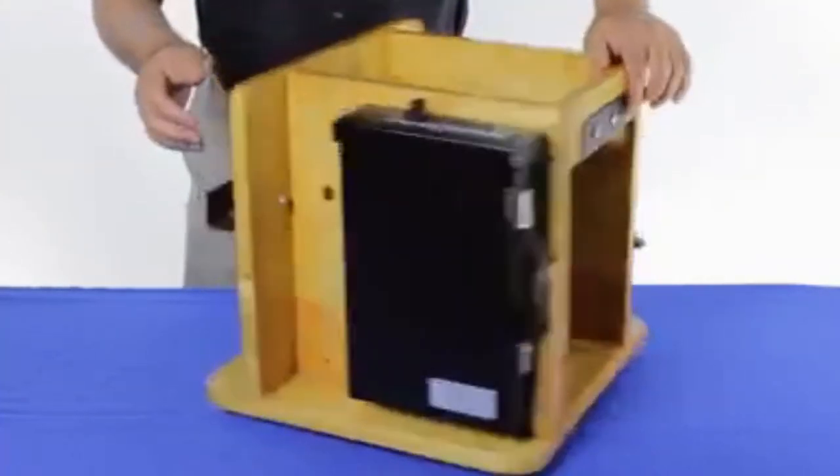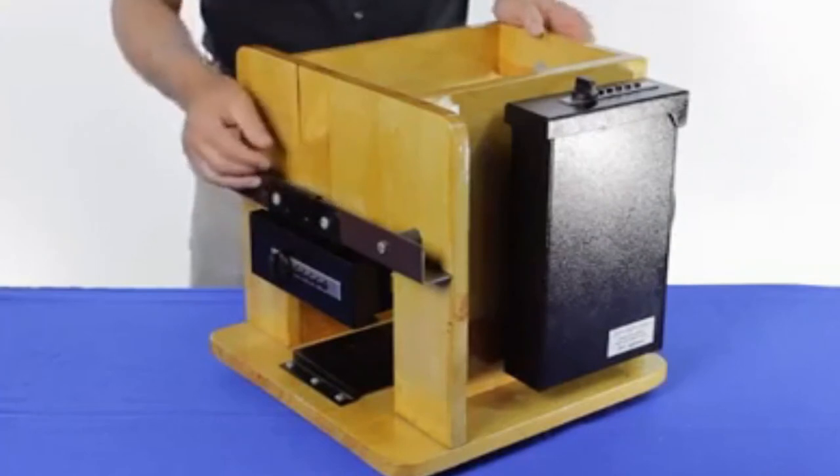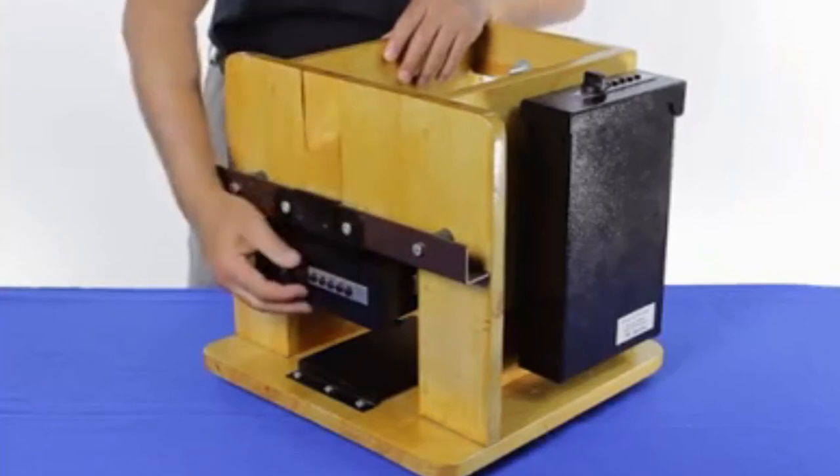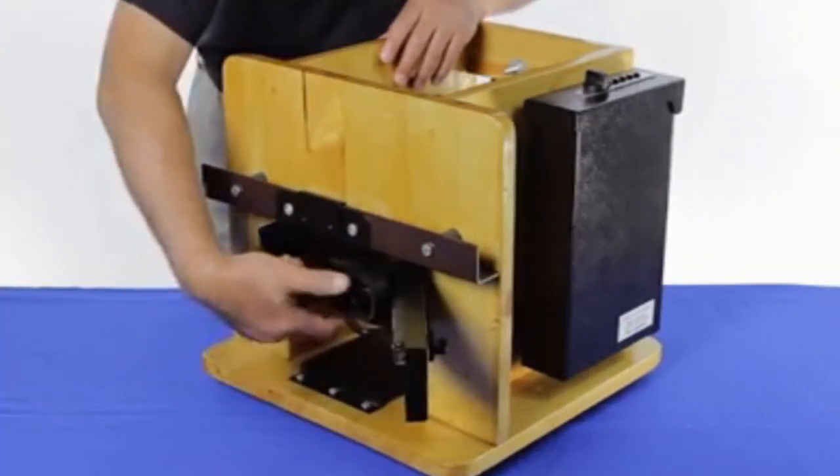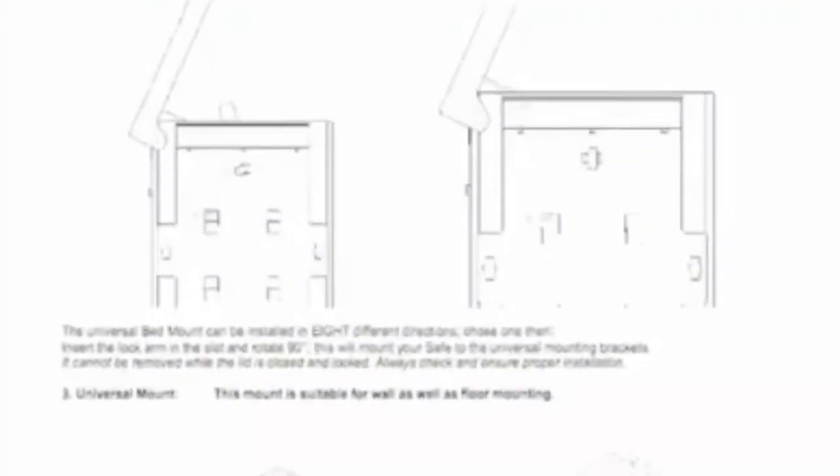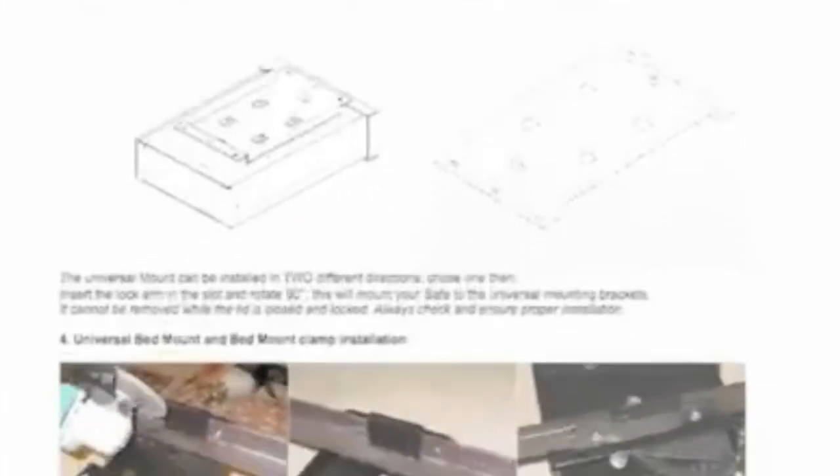Once the gun safe is properly mounted to the bed, and you need fast access to your firearm, all you have to do is reach down, feel the position of the combination, twist the knob, and your firearm will be safely presented to you in seconds. The Titan Gun Safe is a perfect under bed gun safe, and comes with easy instructions on exactly how to mount it to your bed.